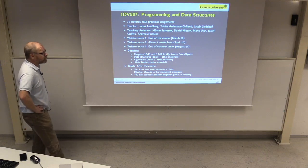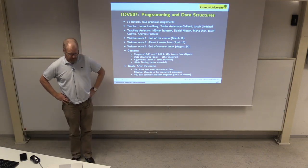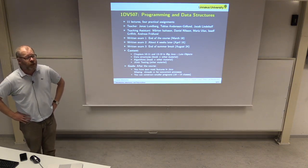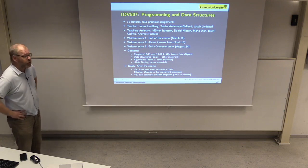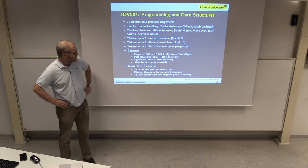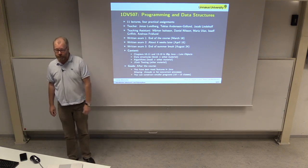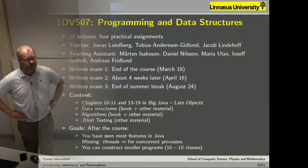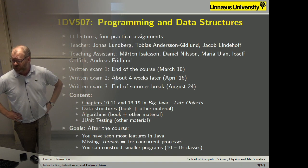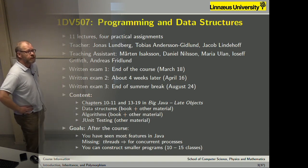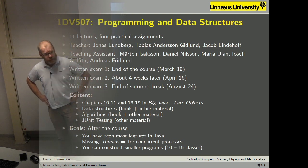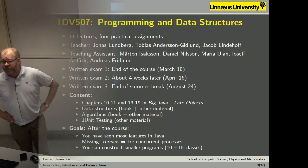The goal after the course is that you should have seen most features in Java. Java is an ordinary programming language and there are not that many features you haven't seen yet. The one thing we haven't talked about and will not talk about in this course are threads for running programs in parallel. That will be the topic for a course you take next year in the operating system course. But apart from that, most features in Java will be presented, and hopefully you should be able to construct smaller programs of about 10 to 15 classes to solve problems.